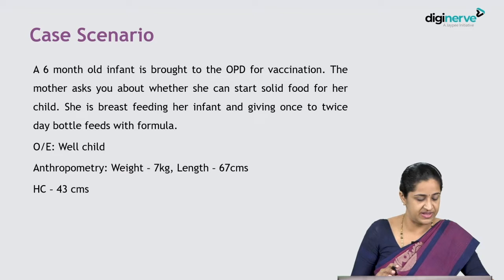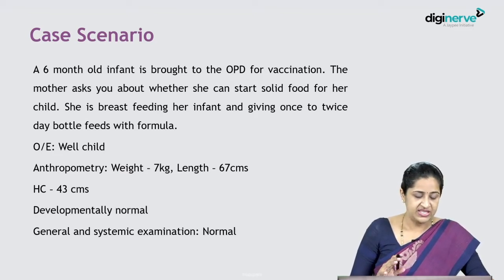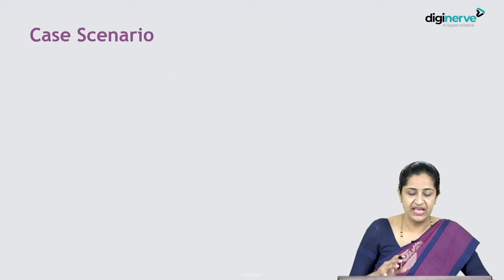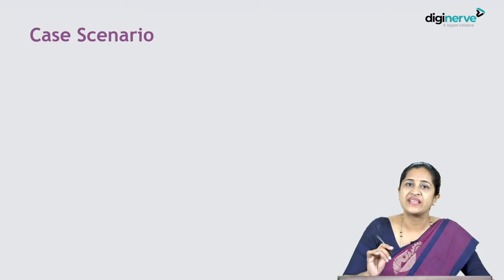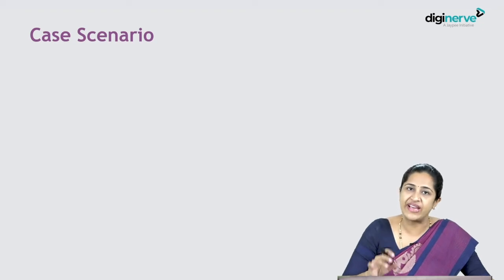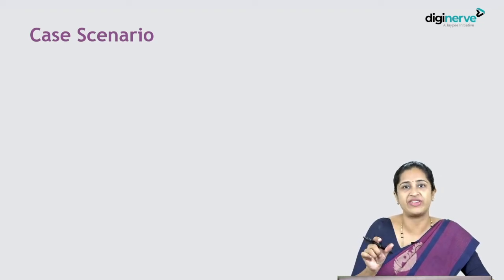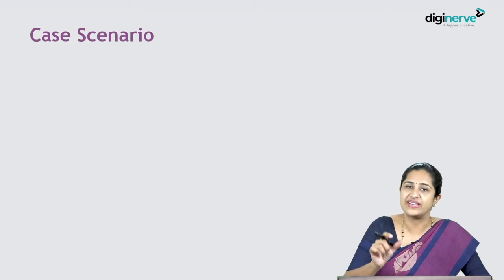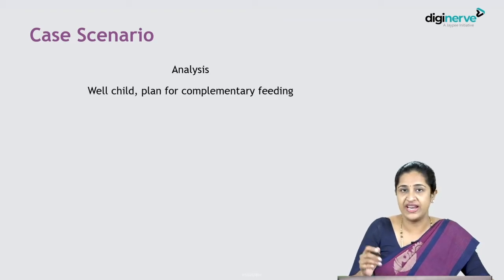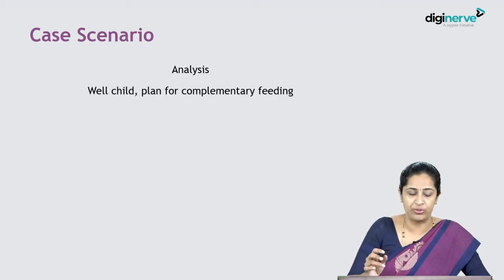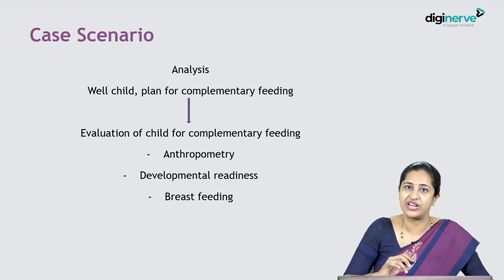Head circumference is 43 centimeters. Developmentally normal. Systemic and general examination were normal. This child is otherwise well and came just for vaccination. But in paediatrics, even a vaccination visit should be taken as a point of care. The mother has asked for advice regarding complementary feeding, so we are going to give her a plan for complementary feeding.